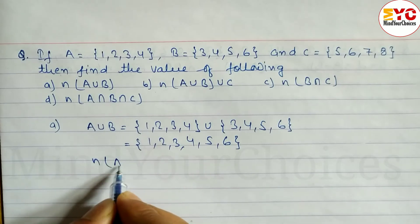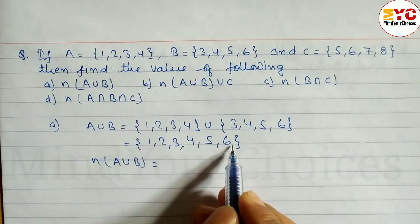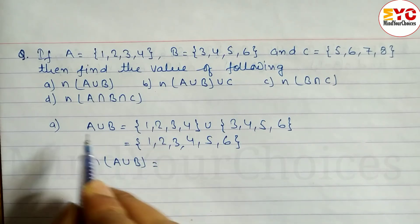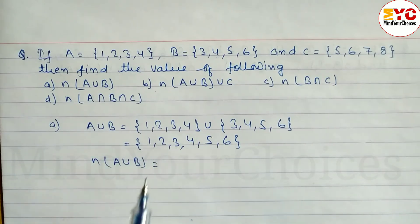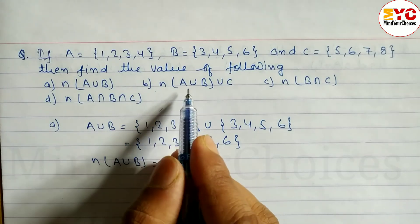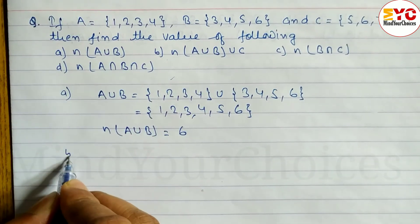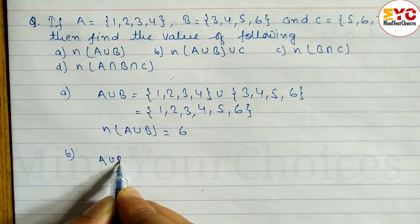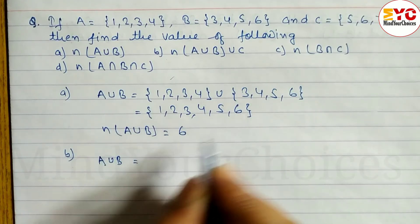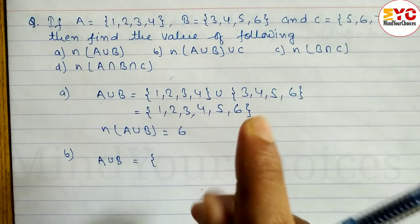So we write N(A∪B). Similarly, the next question: N(A∪B∪C). First we will find A union B. A union B is already found, so we will write directly this step.